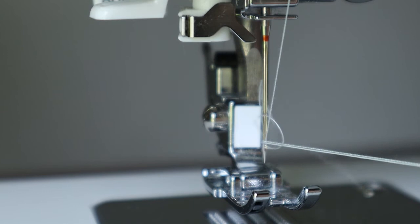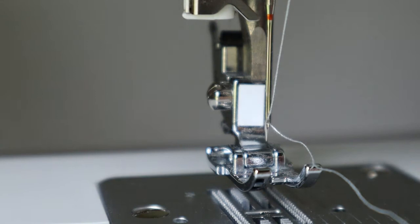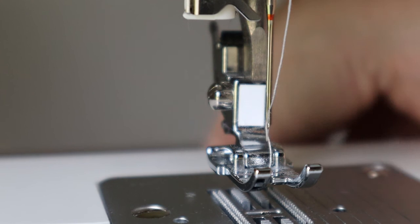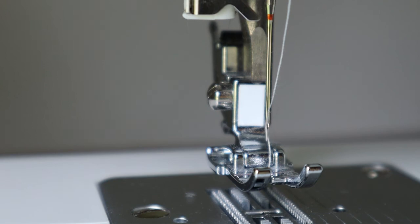There we go, we have a fully threaded needle. Before you get started sewing, just make sure that you pull the thread through the middle of your foot and then put the tail of the thread behind your machine. You have a completely threaded top half of your machine and you are ready to start sewing.